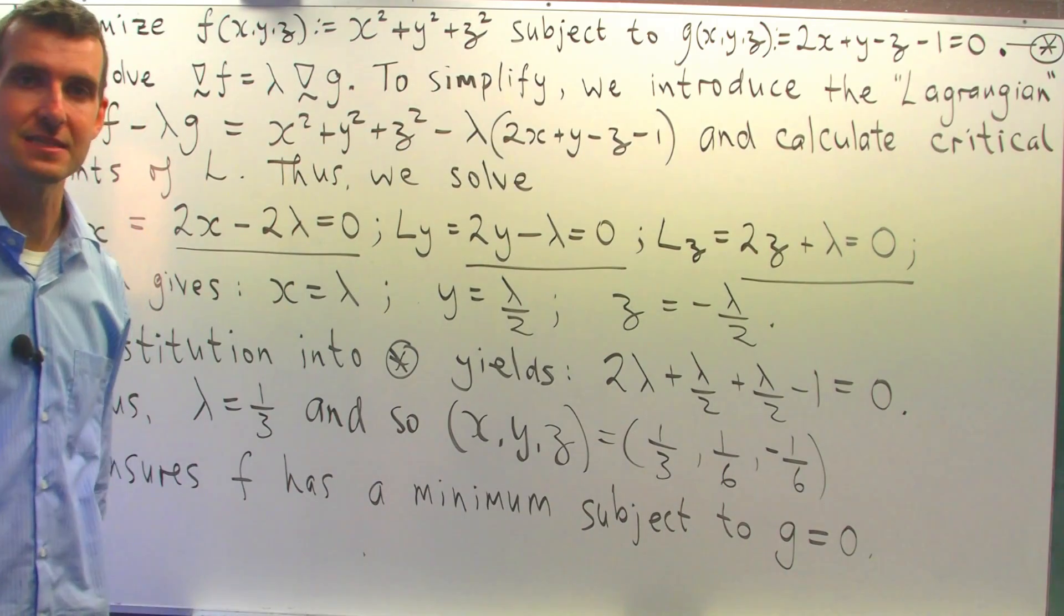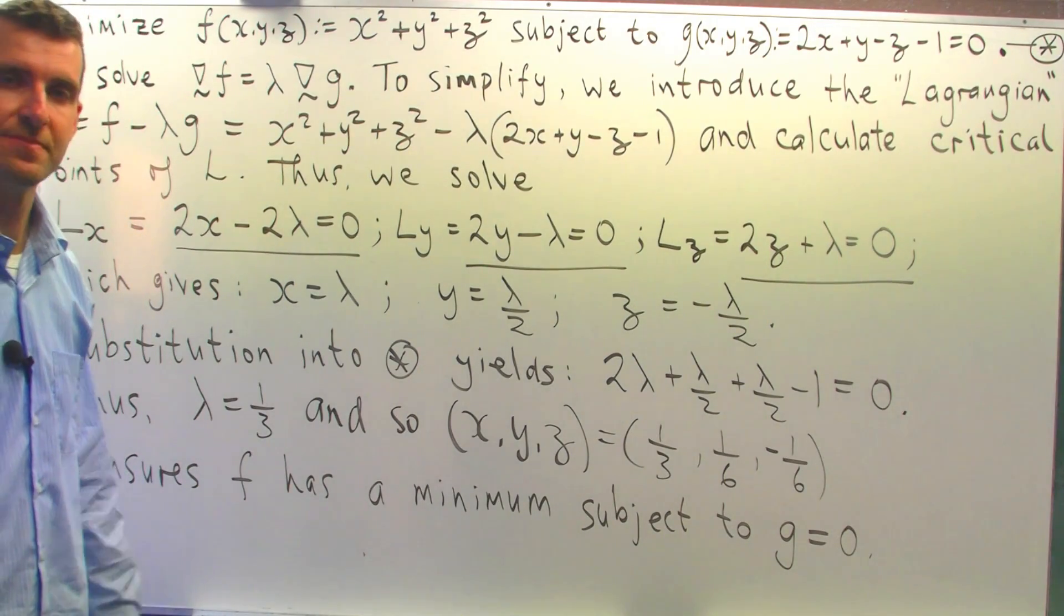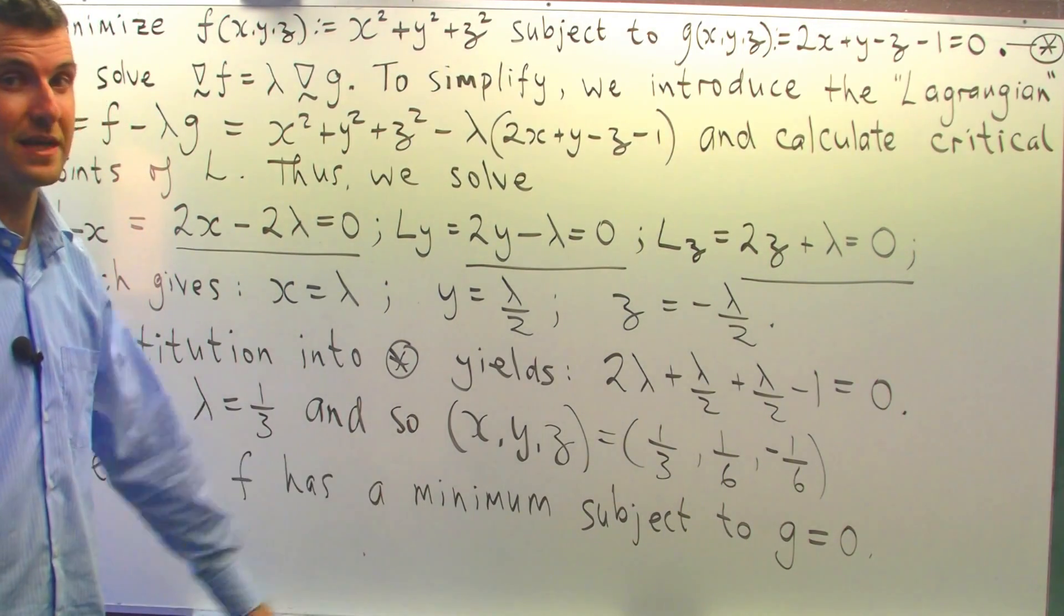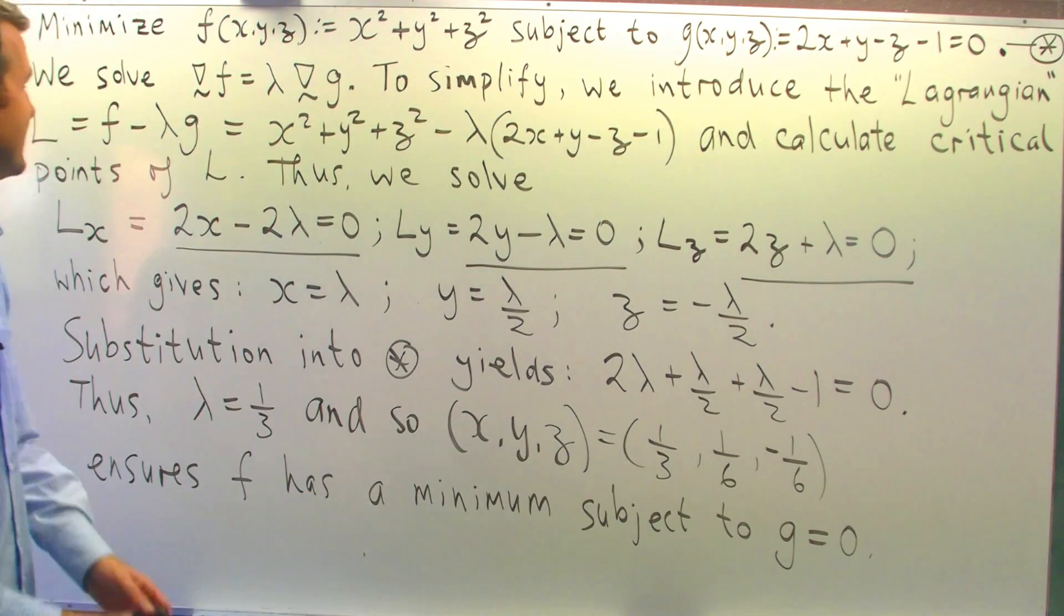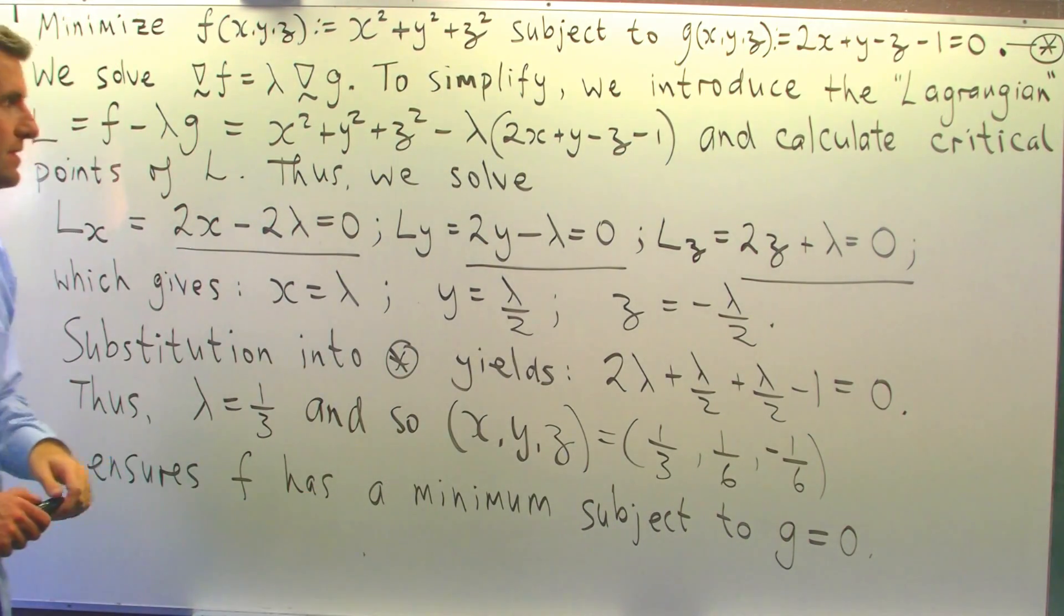But what is the maximum distance between the plane and the origin? Well, the answer is there is not one. There isn't a maximum. So this problem only has a minimum. Other problems in Lagrange multipliers do have a maximum and a minimum. Some of them only have maximum.